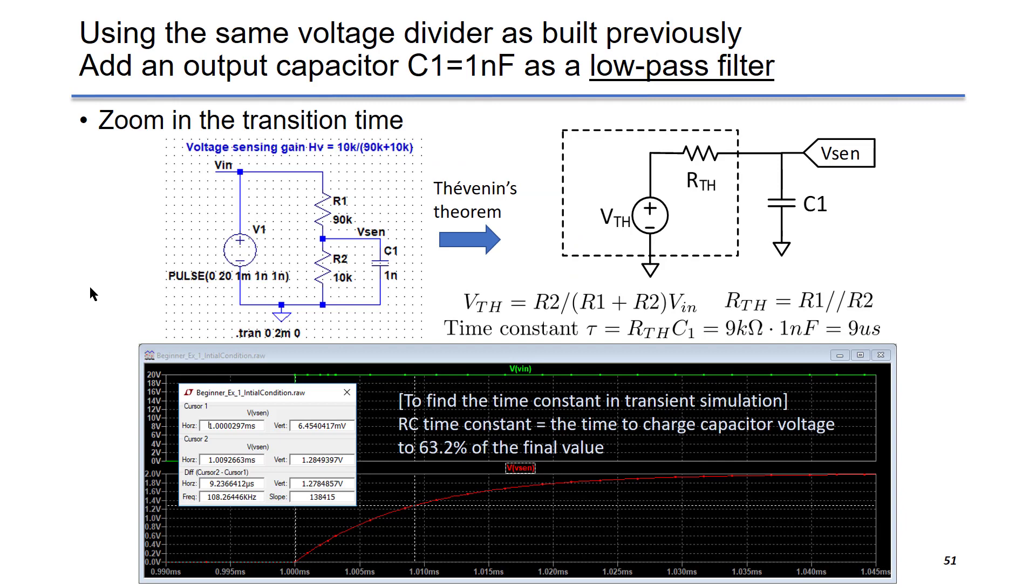Now, let me give you an example. So this is the voltage divider. We put an additional capacitor, C1, 5 nanofarad, across R2, so that we can have a low-pass filter consisting of R and C. Now, let's go to LT SPICE.